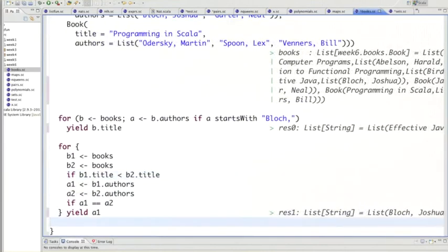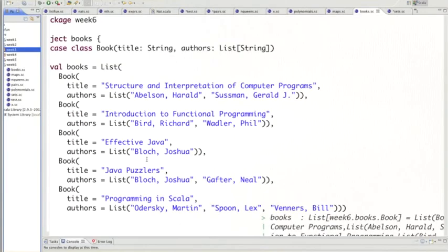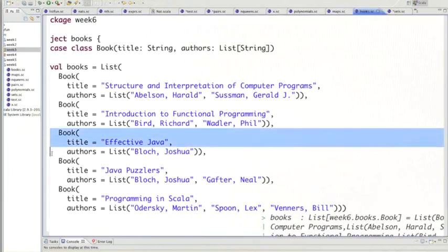But are we done yet? A question for you: what happens if an author has published three books? Is the author still printed once as we desire, or is it printed twice, or maybe three times, or maybe the author is not printed at all? Make your choice. To find out what the solution is, let's add a third book that's also published by the same author.